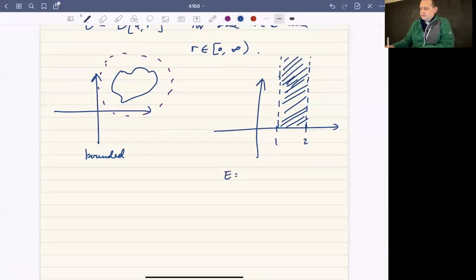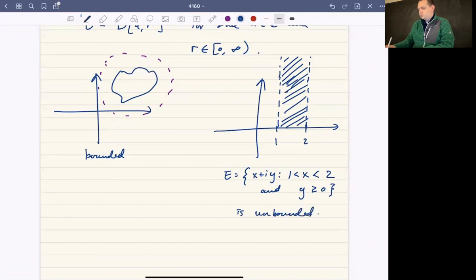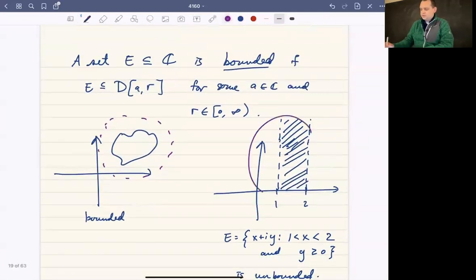So if you were to take E to be the set of complex numbers, x plus iy, where x is between one and two, and y is greater than or equal to zero. This set is unbounded. Doesn't matter how big the circle is. There's no circle that's ever going to contain that set because there's always going to be points above it if our y value is allowed to be as large as we want. So this set is not bounded because there's no circle that can contain it. So that's boundedness.